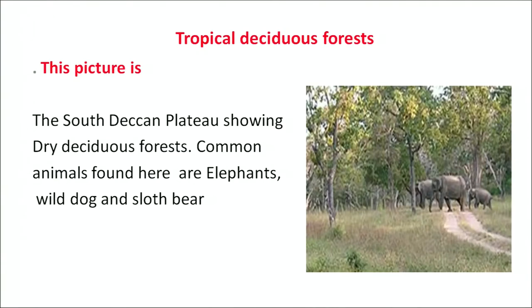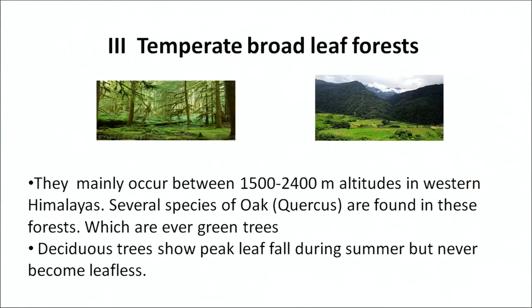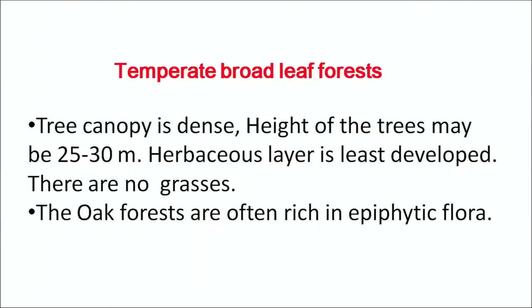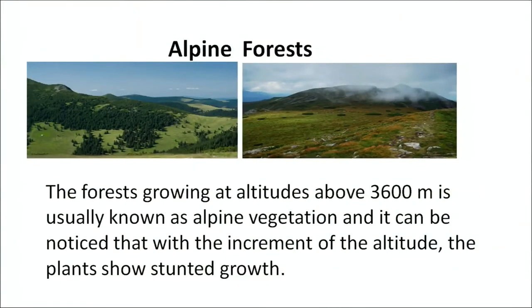The common animals of these forests include elephants, deer and sloth bear. Temperate broadleaf forests mainly occur between 1500 to 2400 meters altitude in the western Himalayas. Several species of oak are found in these forests, which are evergreen trees. The deciduous trees show peak leaf fall during summer but never become leafless. The tree canopy is dense, height may be between 25 to 30 meters, and the herbaceous layer is least developed with no grasses. Oak forests are often rich in epiphyte flora. Alpine forests grow above 3600 meters altitude, and it is noticed that as altitude increases there is a stunted growth of plants.